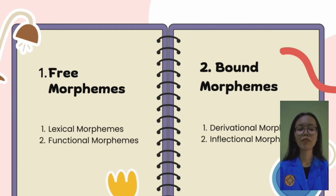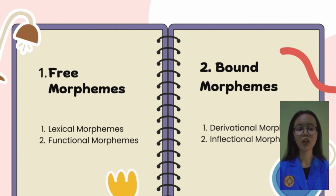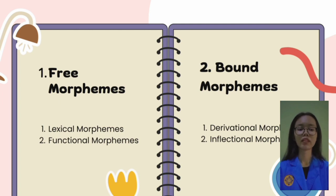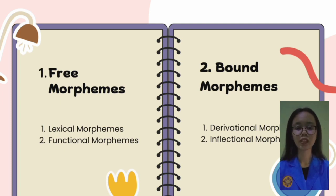The second is functional morpheme. Functional morphemes are morphemes that can stand alone but the content that will be conveyed is unclear, and they are divided into four forms: conjunction, preposition, article, and pronouns.